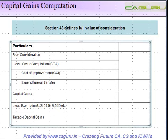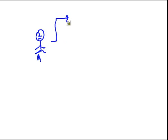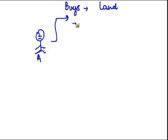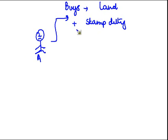Before explaining this entire table, let me explain one thing which will make it easier to understand the whole concept. Let's take a life cycle of a transaction. Say there's a gentleman who buys a piece of land, which is a capital asset. When he buys the land, he has to pay stamp duty.